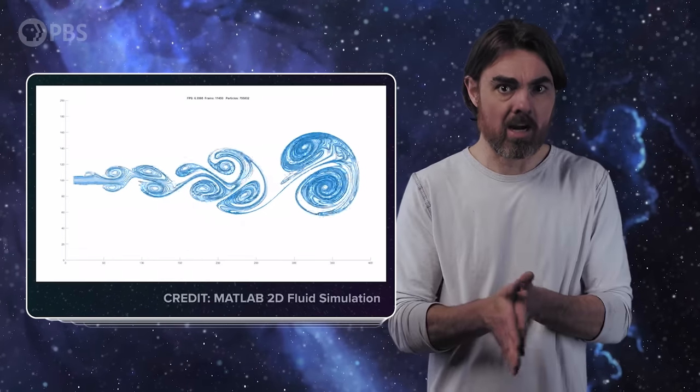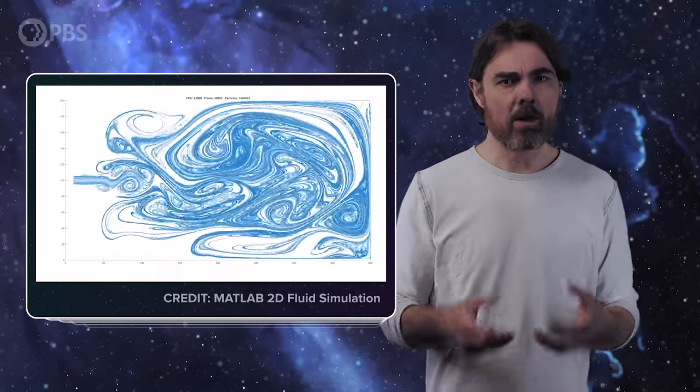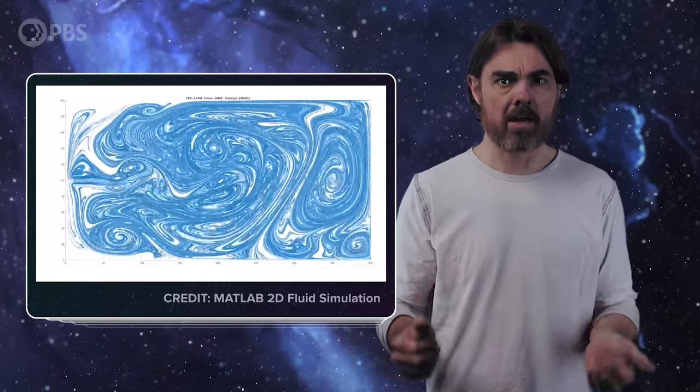We call this viscous drag. That drag is caused by particles in the streamline boundaries colliding and exchanging energy, and it causes the flows to slow down.